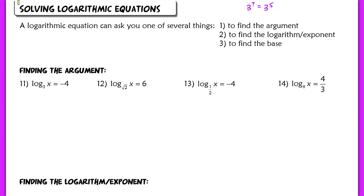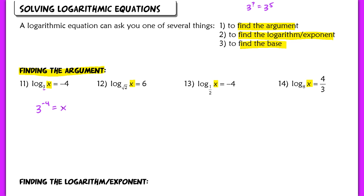The last objective is solving log equations. There are three types: finding the argument, finding the log or exponent, and finding the base. The first series, Finding the Argument, has the variable x in the argument spot. We convert all of these to exponential equations first. The base is 3, so 3 to the negative 4th power equals x. We simply evaluate: 3 to the negative 4th gives 1/81. So x equals 1/81.